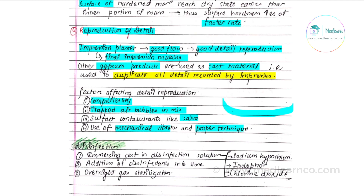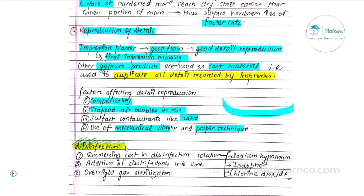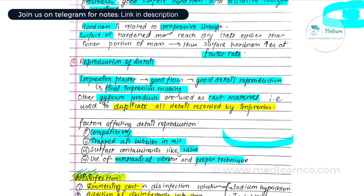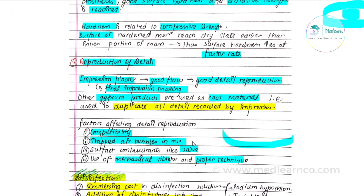Finally, disinfection: for maintenance of proper hygiene, disinfection methods include immersing the cast in disinfecting solution like sodium hypochlorite or chlorine dioxide, addition of disinfectants into the stone, or overnight gas sterilization. Hope this was helpful — thank you for watching.